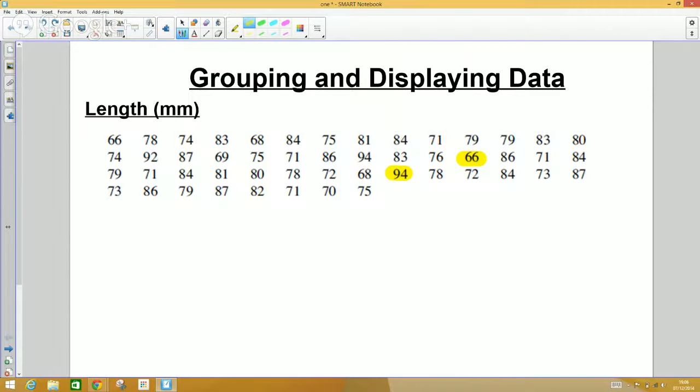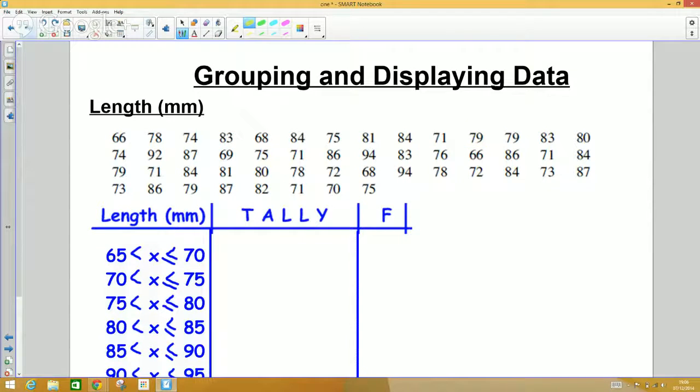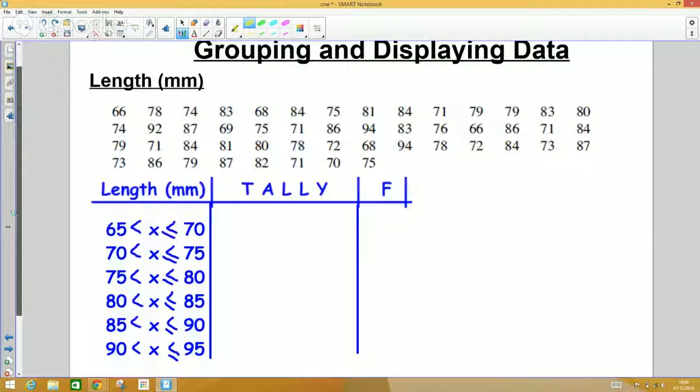What we don't do is make a table going from 66, 67, 68 all the way to 94, because that would be too long. The best thing to do is to put it into groups. So here's one I made earlier.